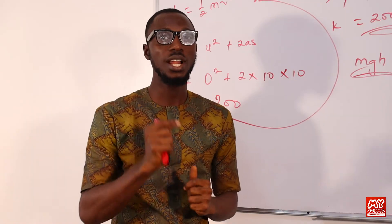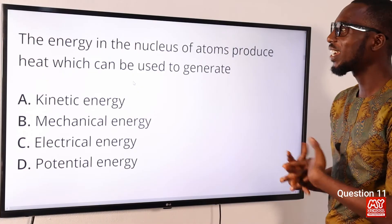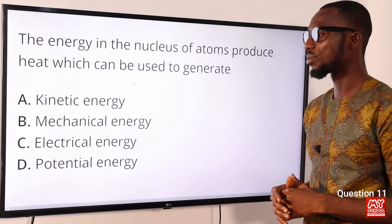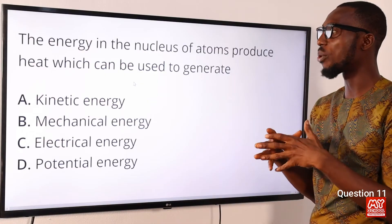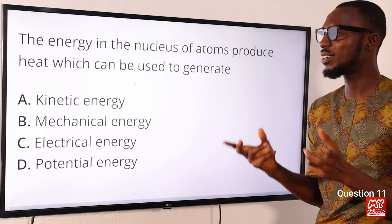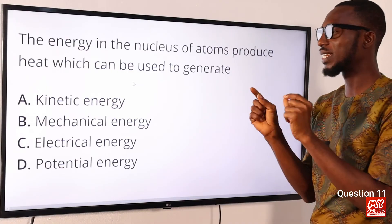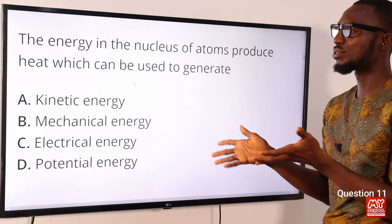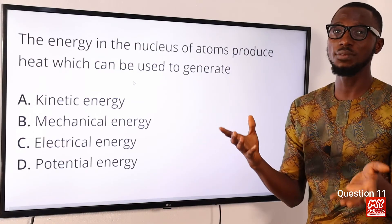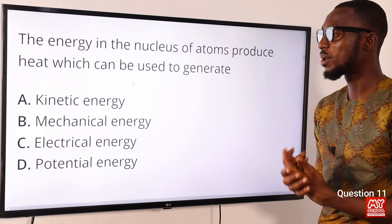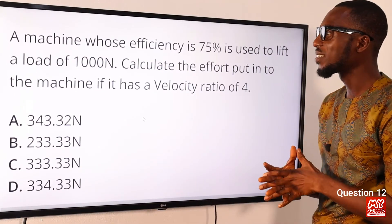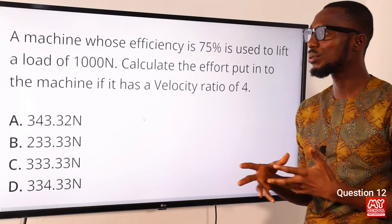Question eleven: the energy in the nucleus of an atom that can be used to generate electrical energy. The energy stored in the nucleus of an atom is nuclear energy. Nuclear power plants convert this energy — released as heat — into electrical energy. This source accounts for about 14 percent of the world's electrical energy supply. The correct option is option C: electrical energy.